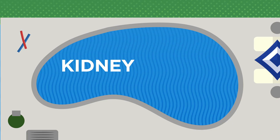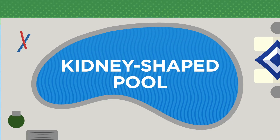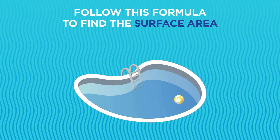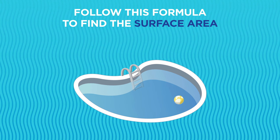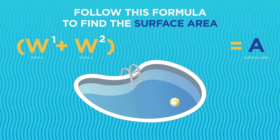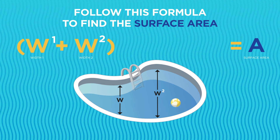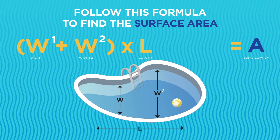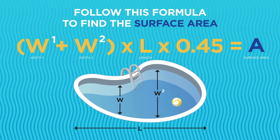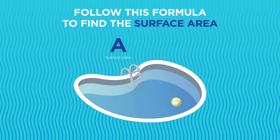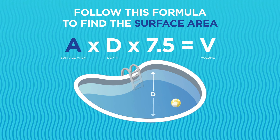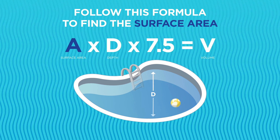For a kidney-shaped pool, start by finding the surface area. To find the surface area of your pool, add the distance between the two widest points together, then multiply by the length and 0.45. Multiply the area by the average depth, then multiply by 7.5.